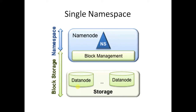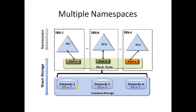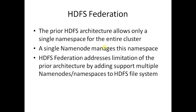In the normal case we have a single name node and many data nodes, and that single name node handles all namespaces — everything is under slash. Under slash we have different directories in HDFS: slash users, slash TMP, slash hive, etc. But with multiple namespaces we can have multiple name nodes — these are federated namespaces — and each one handles separate directories. All data nodes communicate with all name nodes.